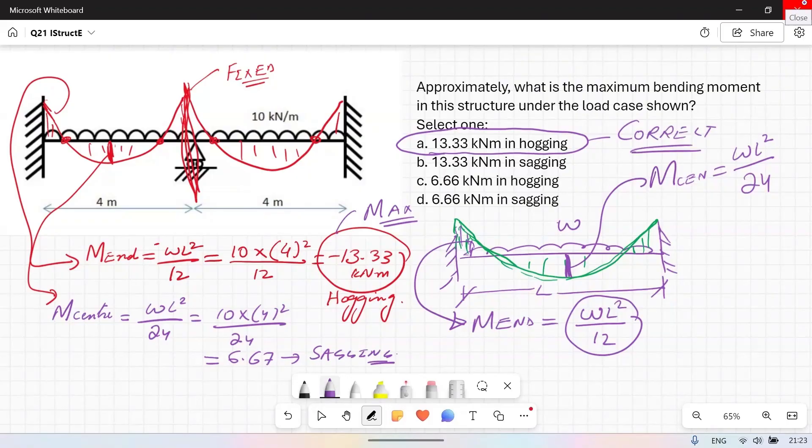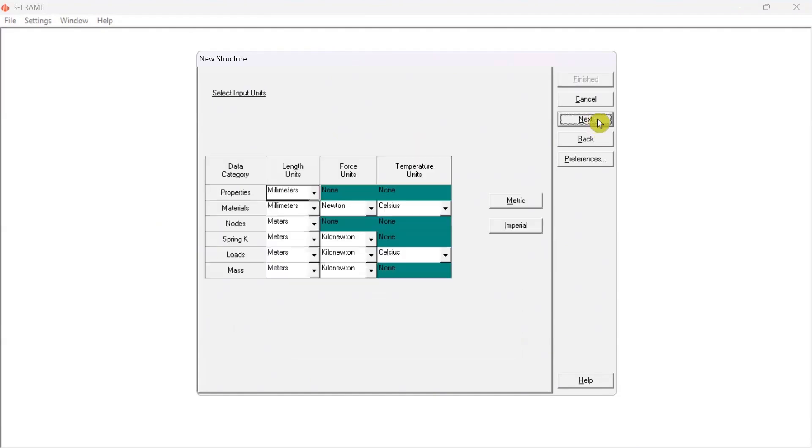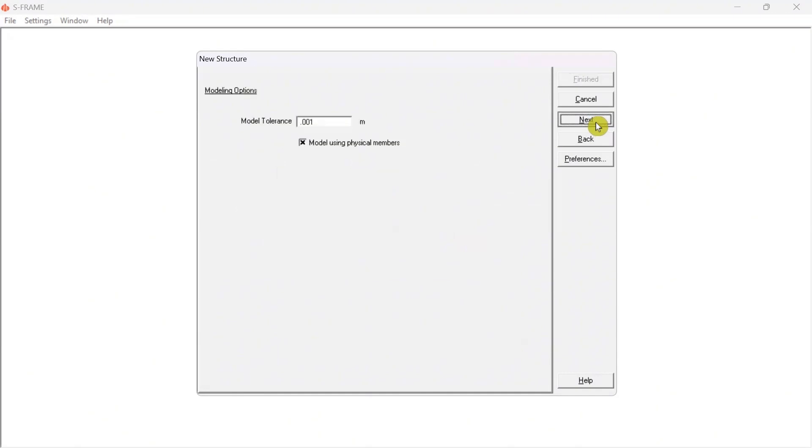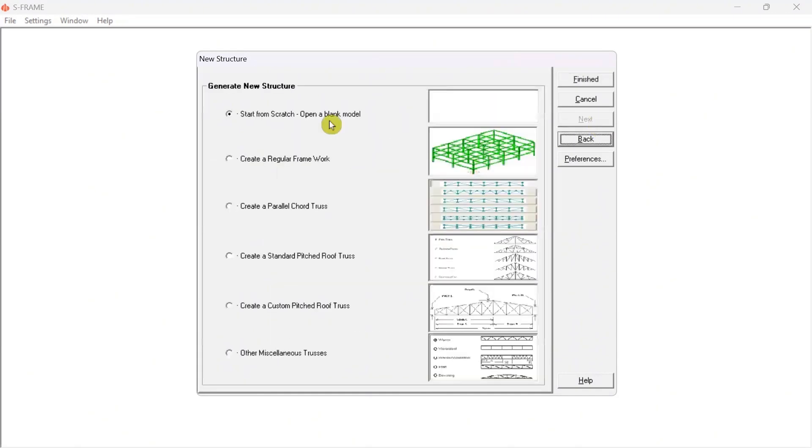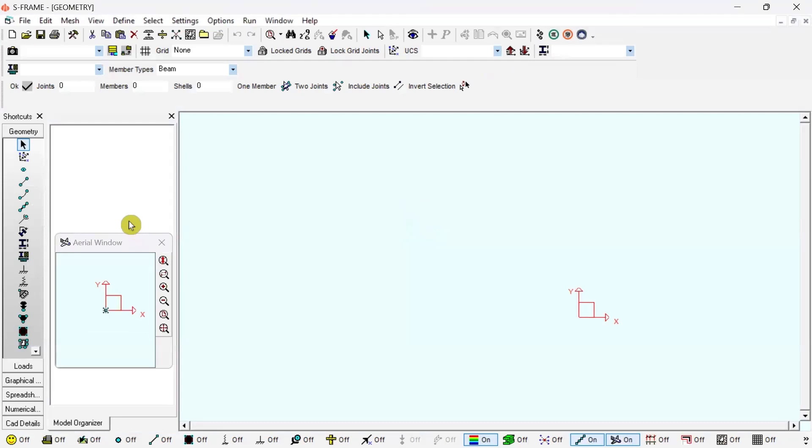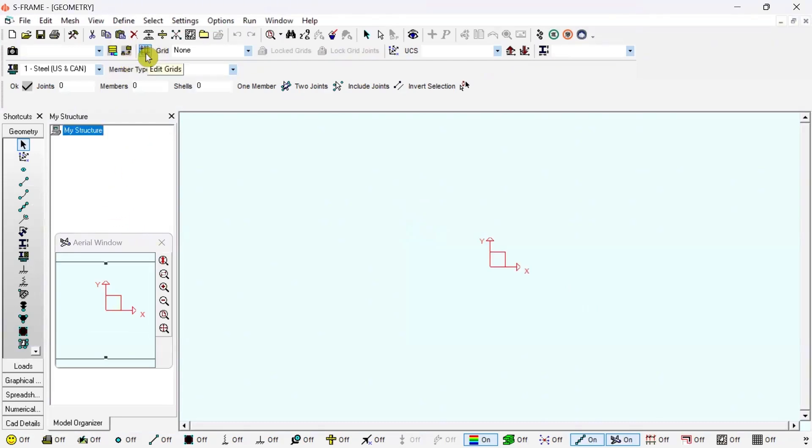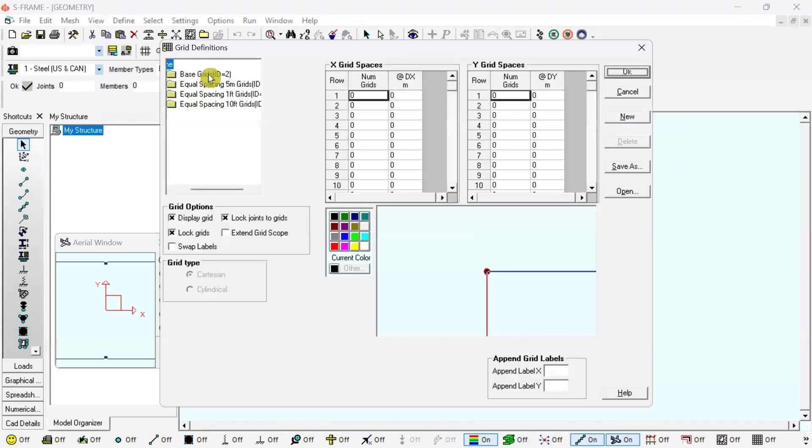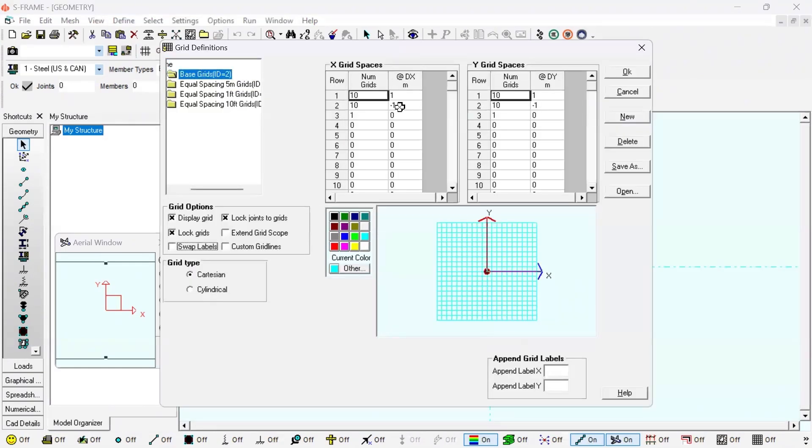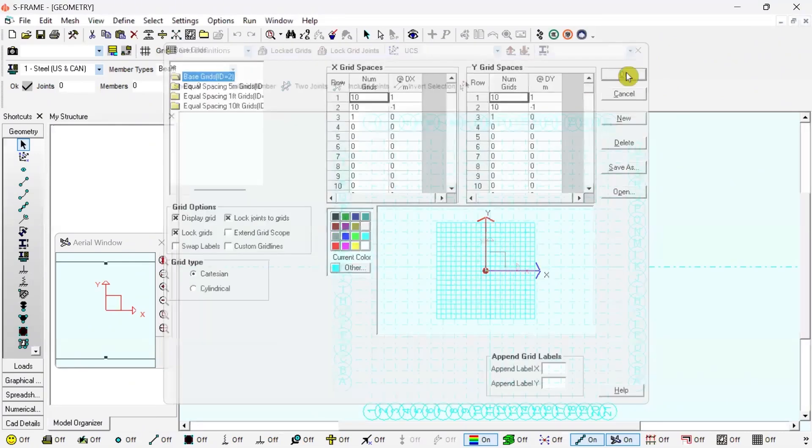I can use S-Frame to solve this problem. Let's say continuous beam. Next, keep everything as default, next, next, next, and I want to start from scratch and click on Finished. The first thing you want to do is to define the grids, so click on Edit Grids.